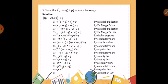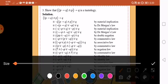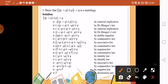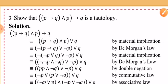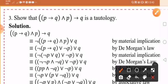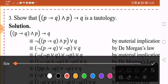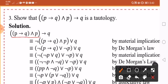Show that P implies Q and P implies Q is a tautology. Since we would like to prove it is a tautology, copy the first combination: P implies Q is the first quantity. This is an implication, so apply material implication.